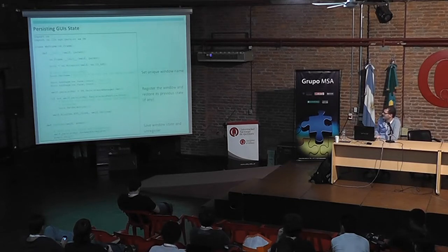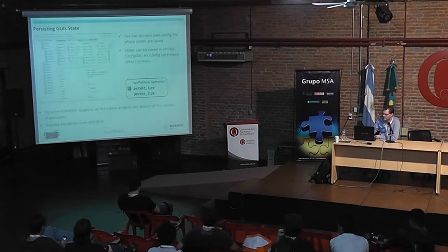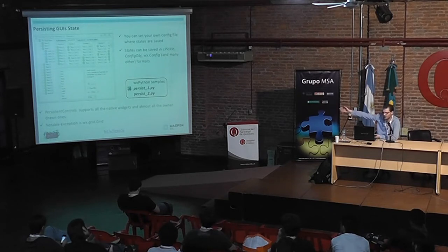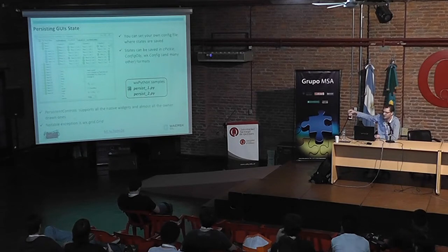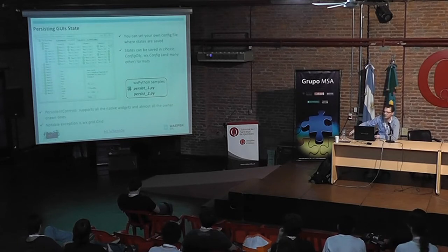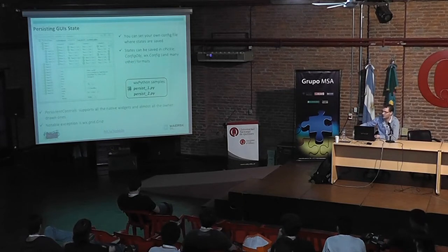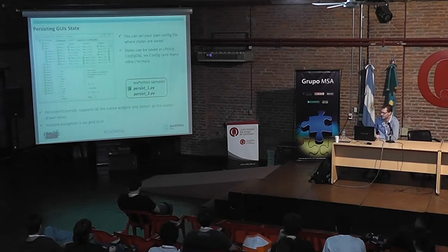The code example shows that everything except the three highlighted lines is standard WX Python for a normal application. I've added just three lines telling WX Python to use the Persist library, registering one window in the main interface, saving the state upon closing and unregistering. Whatever your interface looks like — however complicated, with any selection, text, date — when you close it, everything gets saved in a config object, pickle, or WX config. When you reopen it, the UI state is exactly as you left it.